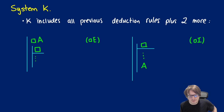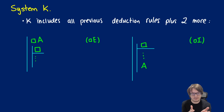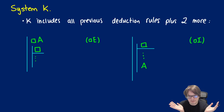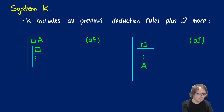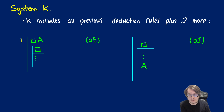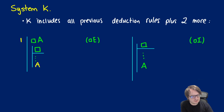Let's take a look at System K. System K is the first system we're going to look at in natural deduction. It includes all of our previous deductions, theorems, axioms, and rules, plus two more: box elimination and box introduction, also known as box-out and box-in depending on the book you look at.